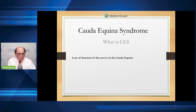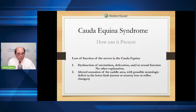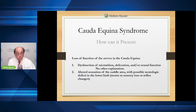So that's a little bit of the anatomy background. Cauda equina syndrome is loss of function of those lower motor nerves in the cauda equina where they're all caught together. The research definition is the dysfunction of micturition, defecation, and/or sexual function with no other explanation, and altered sensation in the saddle area, with possible neurologic deficit in the lower limbs — that's motor, sensory, or reflex changes. Expanding on that: micturition and defecation means bowel and bladder, sexual function, and altered sensation in the saddle area.